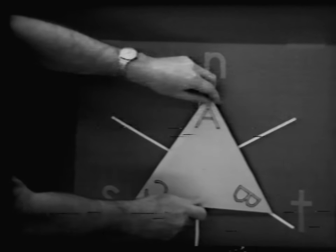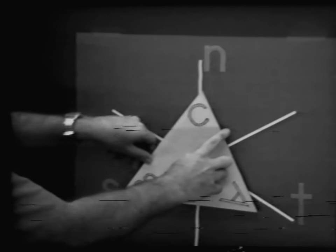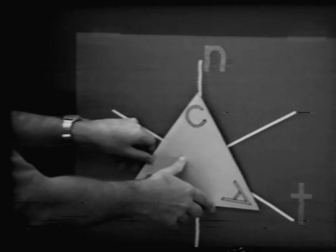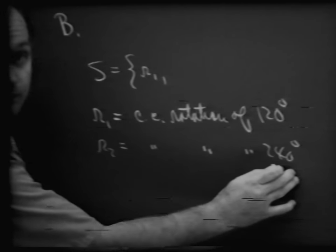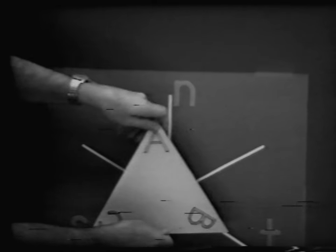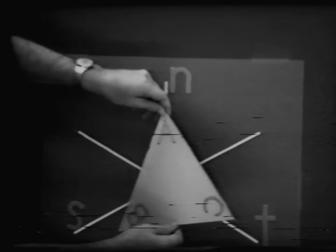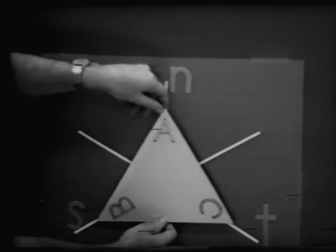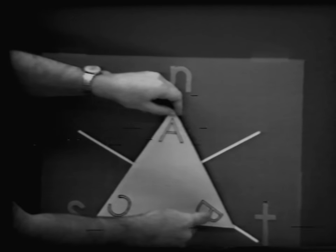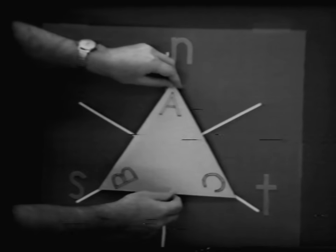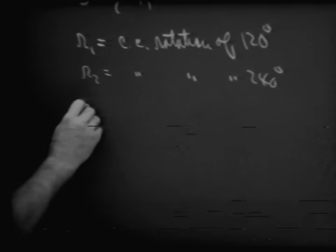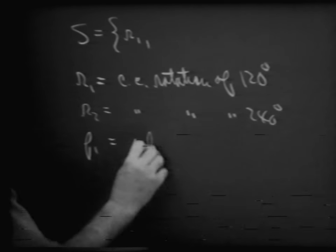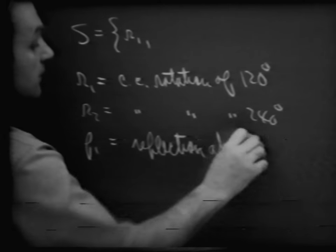If we then were to start from our starting position and rotate further — that would be 240 degrees in the counterclockwise direction. So let's call that element R sub 2, which would be a counterclockwise rotation of 240 degrees. Now let's come back to our starting position and think of a reflection about the line N. If we reflect about line N, we end up with the triangle in that position. So let's call that F sub 1 — a reflection about the line N.